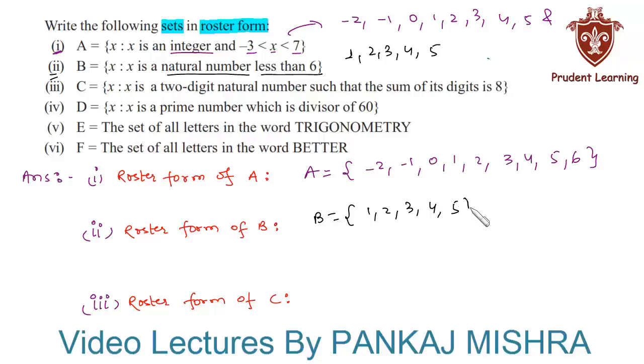We can write set B in roster form as B = {1, 2, 3, 4, 5}. In our third section we are given set C, which is equal to x such that x